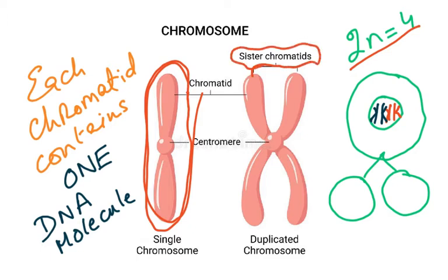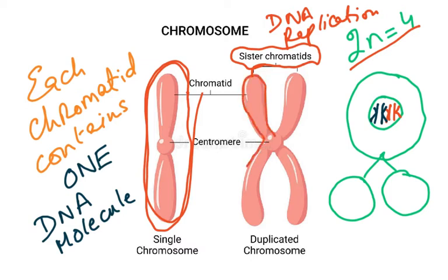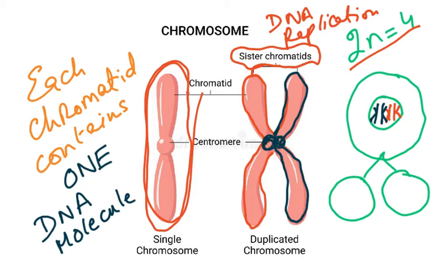This is called sister chromatids, and it happens in DNA replication which we study in the next chapter. DNA replication produces an exact clone — a copy of the original chromosome. The two chromatids are joined for a short while, and the area where they are joined is called the centromere — 'centro' meaning central. So this is one chromosome made of two sister chromatids.